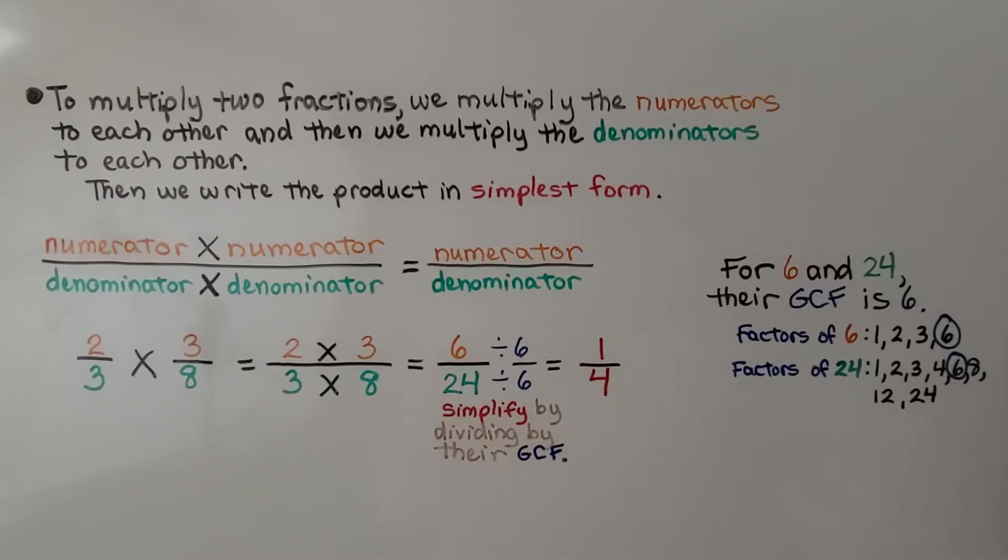In this example, we multiplied the numerator to the numerator, and the denominator to the denominator, and then to simplify, we used their GCF.